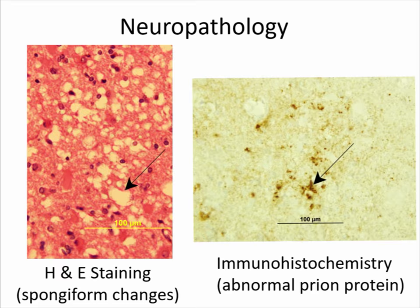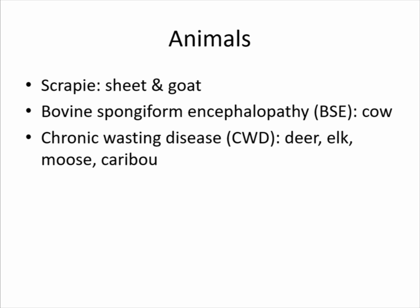Animals also have prion diseases. In sheep and goats, there's a prion disease called scrapie — named because one symptom is itching that causes them to scratch against surfaces. Cows get bovine spongiform encephalopathy, sometimes referred to as mad cow disease. In the U.S., we have chronic wasting disease, which affects deer, elk, moose, and caribou. Later in the talk, I'll discuss why we care about CWD specifically as family members and scientifically, especially in the U.S.